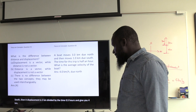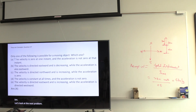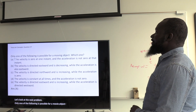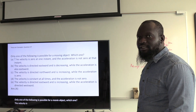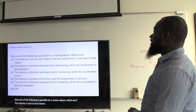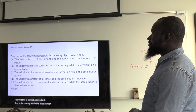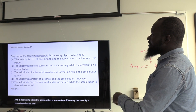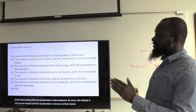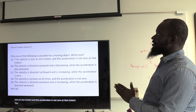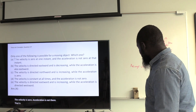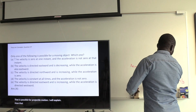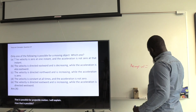The next problem: only one of the following is possible for a moving object. The velocity is zero at one instant and the acceleration is not zero at that instant — that is possible for projectile motion. I will explain how that is possible.